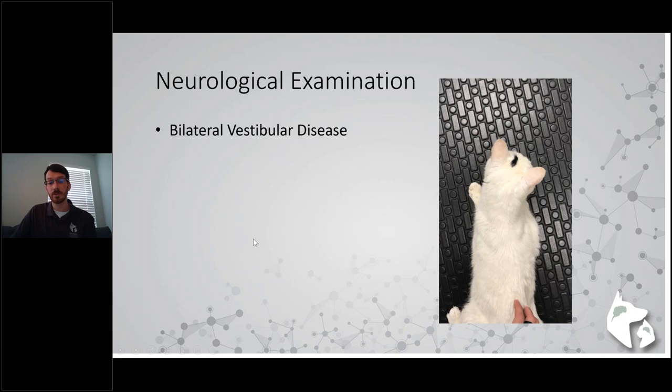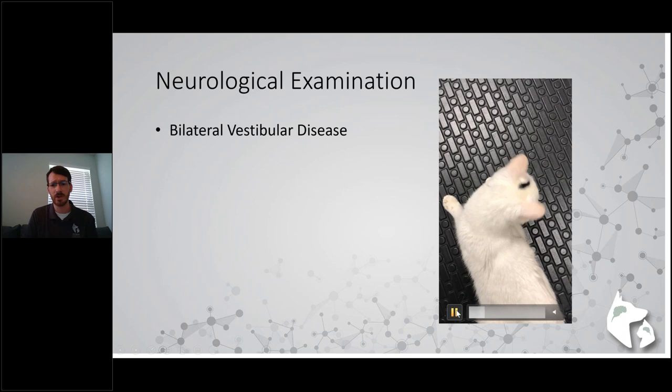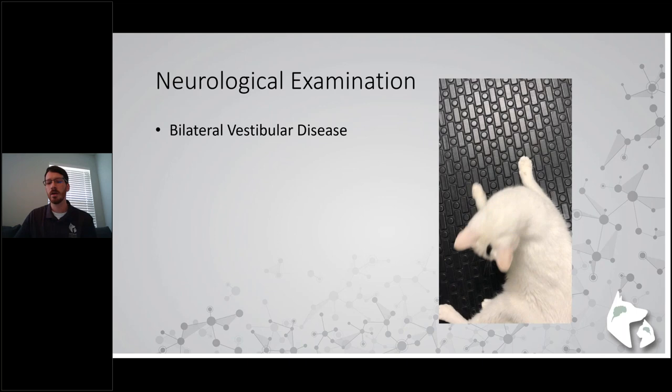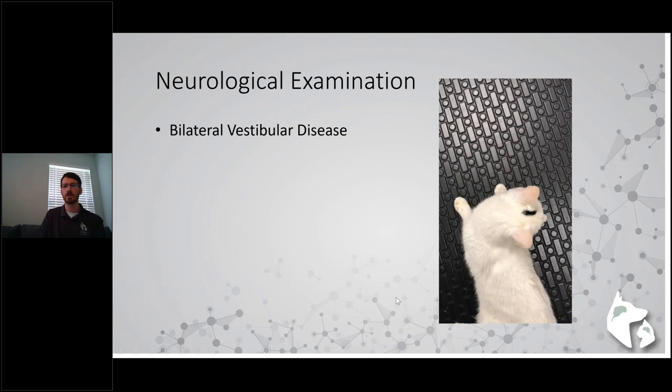If you have patients with head tilts and signs of balance problems, sometimes you can see bilateral vestibular disease - patients that have potentially ear infections in both ears. They present with very wide, abnormal head excursions and may wobble back and forth. There's a video example of a kitty cat going back and forth, and this patient actually had bilateral ear infections.